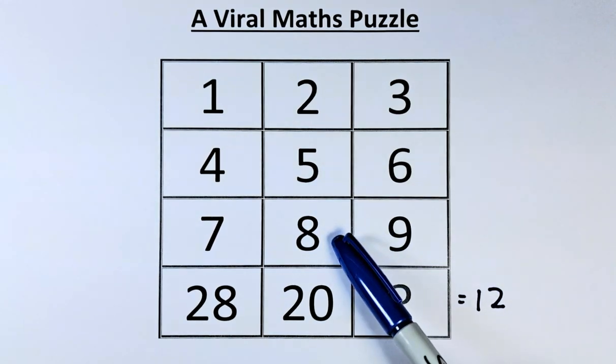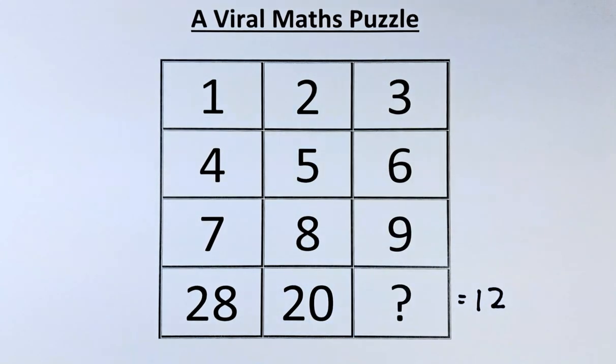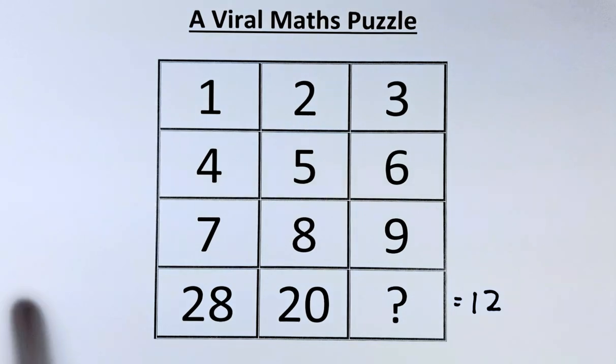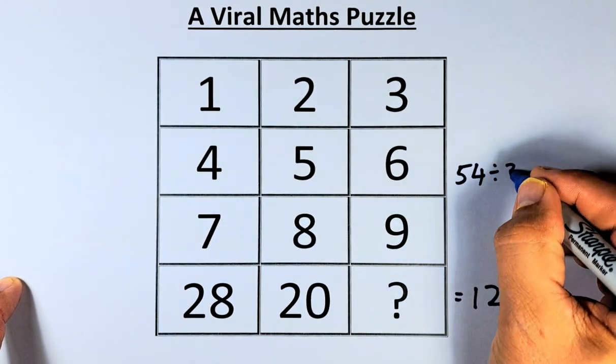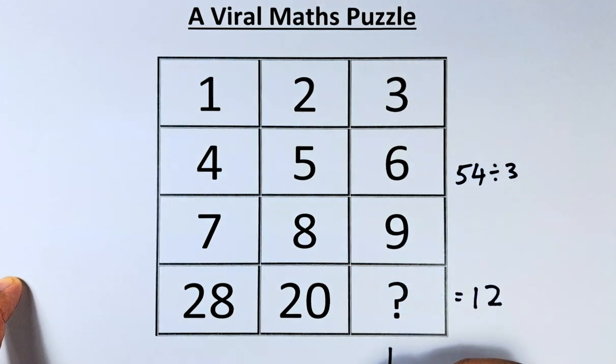for the second row, 5 times 8 is 40. 40 divided by 2, that will give us 20. So in our case, we have 6 times 9 will give us 54. And 54 divided by 3, that will give us 18.